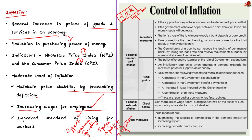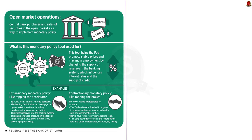OMO is a monetary policy measure taken by the RBI to control the liquidity in the system. To conduct an open market operation, the RBI enters the financial markets and either buys or sells government securities like treasury bills, bonds or notes to commercial banks, financial institutions or the public. Now let's briefly discuss the process involved in the OMO operation.